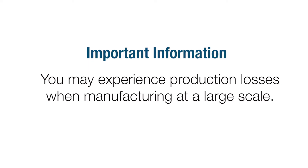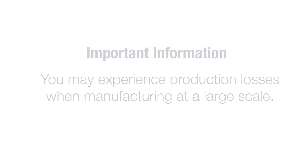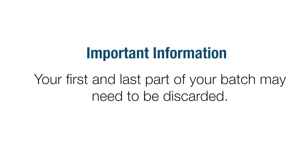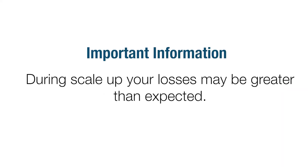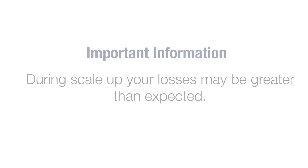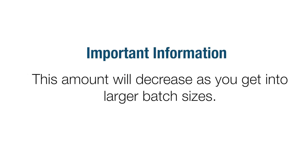When you manufacture food at a large scale, you may also have production losses. For example, sometimes the first and last part of your batch will need to be discarded. Ideally, you may be able to find another use for this material or rework it into production. During scale-up, be prepared that your losses might be greater than expected as you are testing the new product and/or equipment. This amount will decrease as you get into larger batch sizes.